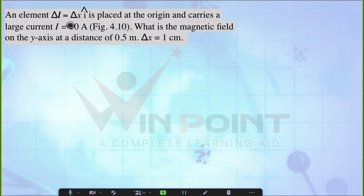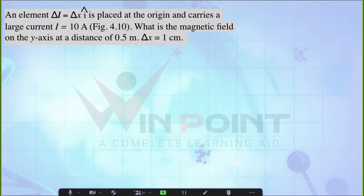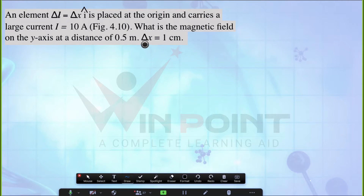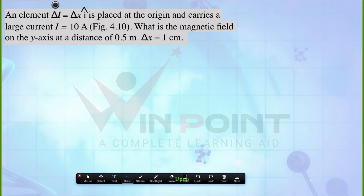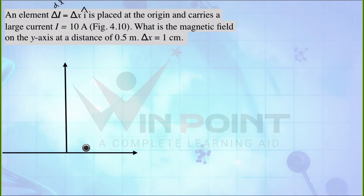A current element dl equal to dx·î is placed at the origin and carries a large current I equal to 10 ampere. What is the magnetic field on the y-axis at a distance of 0.5 meter? Here delta x equals 1 centimeter — note that delta l is actually dl. Let us draw the diagram according to this question, with the element dl placed at the origin.